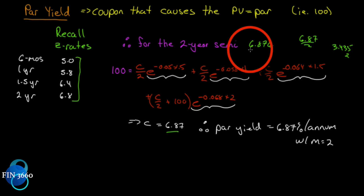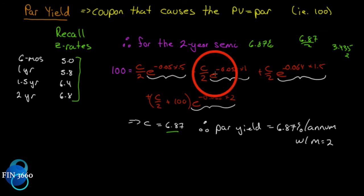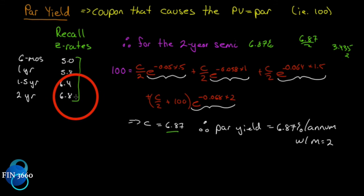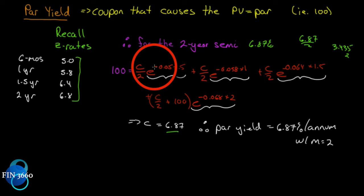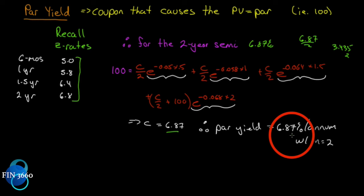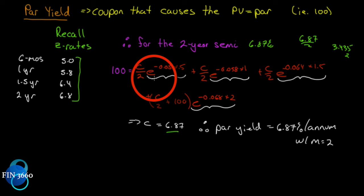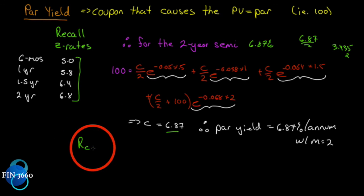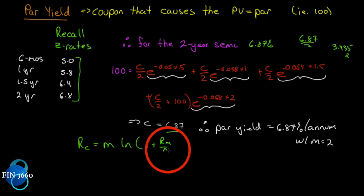If we had discounted every cash flow by 6.87% with one constant rate, we'd know it's a par bond because the coupon equals the market rate. But here we're discounting each cash flow by a different amount. So the question is: what coupon would make it a par bond given these spot rates? That's the par yield — the market rate of return implied by these spot rates that would turn this bond into a par bond.